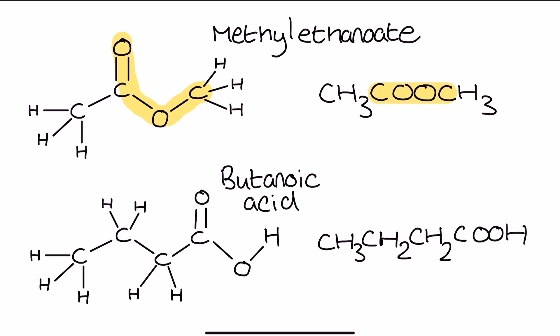Then we've got butanoic acid underneath, which is something quite similar. For butanoic acid, the carboxylic acid group is this COOH at the end. So if esters have COOC, then carboxylic acids have COOH. And the butanoic acid carboxylic acid functional group is all of this section here.